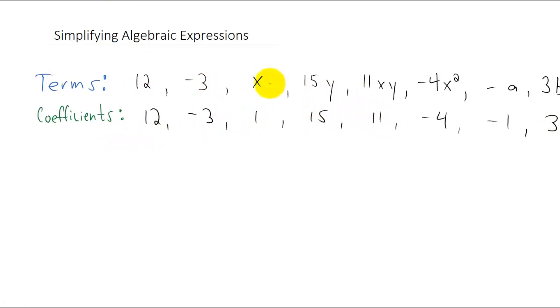This x, this y, this x, this y, this a, this b, this x, which happens to be squared. Those are all called variables.